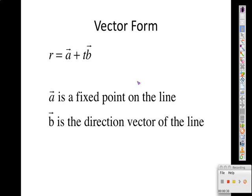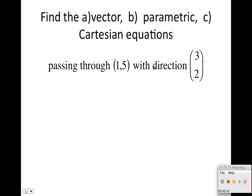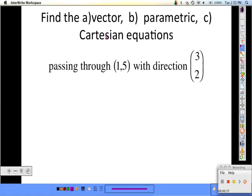I want to write the vector, the parametric, and the Cartesian equations for a line passing through the point (1, 5) with direction vector (3, 2). So the vector equation: